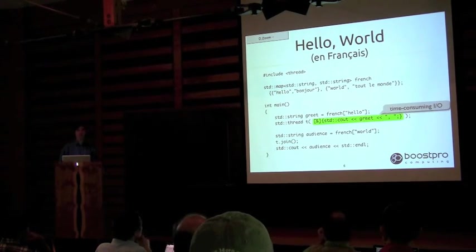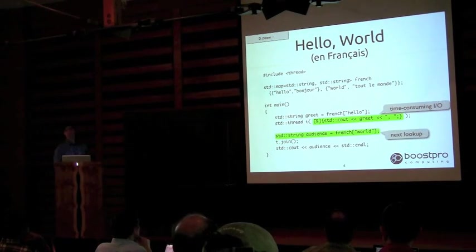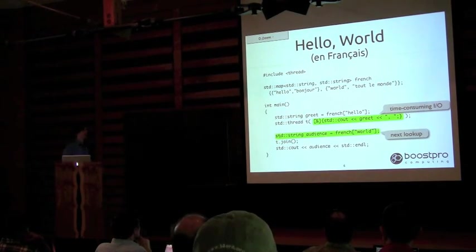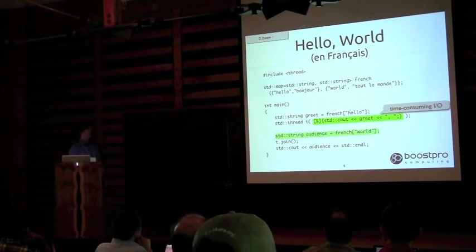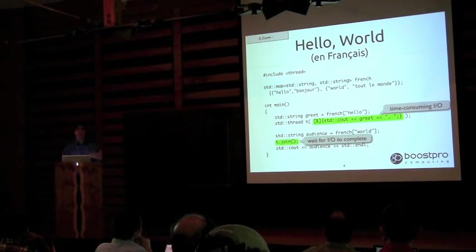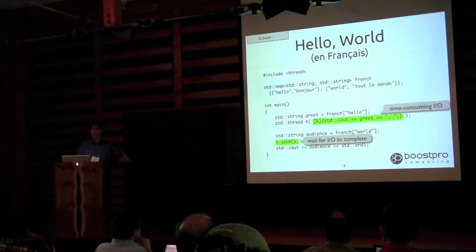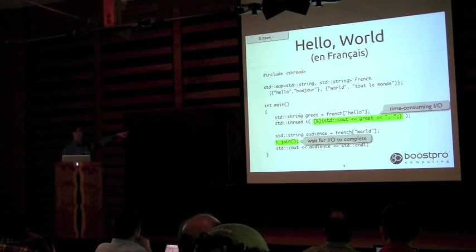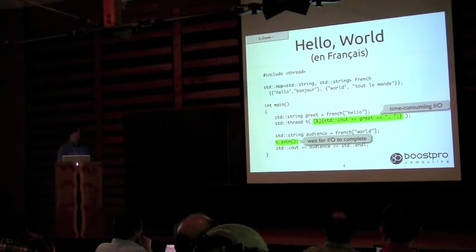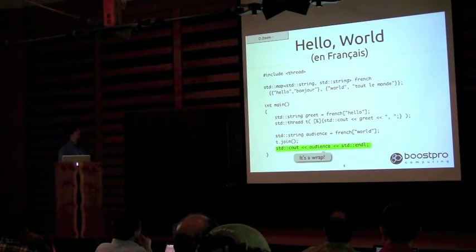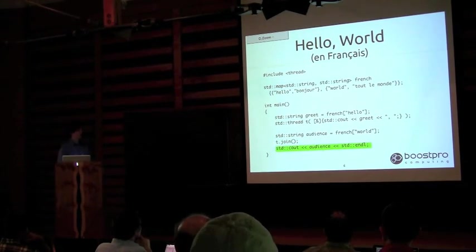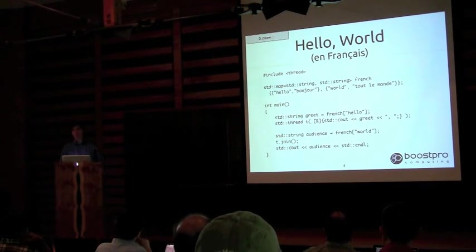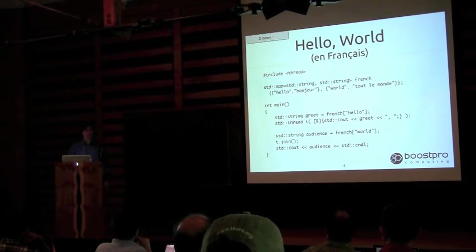I have my dictionary and I'm going to look up the greeting for the word hello. I get 'bonjour' into my greeting string, and then I create a thread to send that string out to the screen. Imagine that this thread had to do a lot of work — expensive I/O. While it's doing that, I can be doing the lookup for the next word. I want to serialize the output, so I have to join with the thread I started above. Now I can output the word for world.